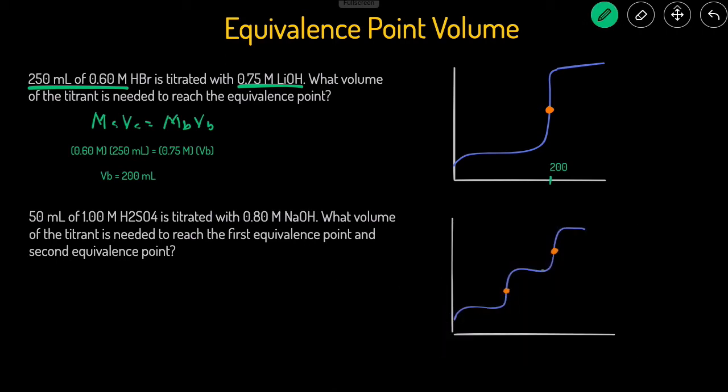So looking at the graph, it's going to look something like this, where that's the first equivalence point and that's the second equivalence point. So to solve for the first equivalence point, we can just use the shortcut MAVA equals MBVB. The molarity of the acid is 1 molar. Again, we know this is the acid because it has the H in the front. The volume of the acid is 50 milliliters. The molarity of the base is 0.8 molar. And then the volume of the base, that's what we're trying to solve for.